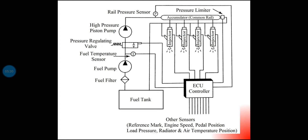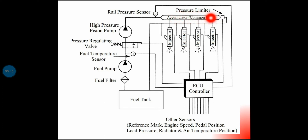The CRDI system's basic components include: fuel tank, fuel filter, low pressure pump, fuel temperature sensor, pressure regulating valve, high pressure piston pump, common rail (which is the high pressure fuel accumulator), fuel injectors connected to the cylinders, and the electronic control unit (ECU).